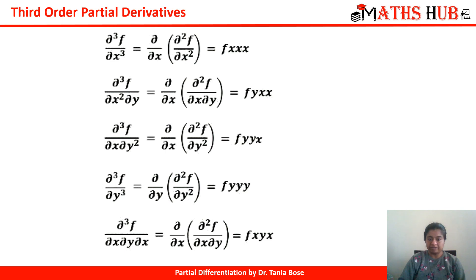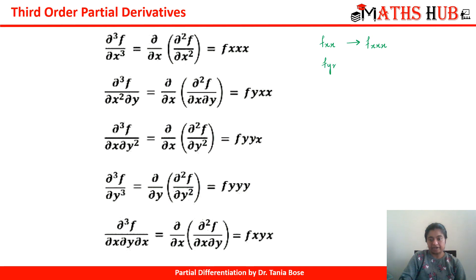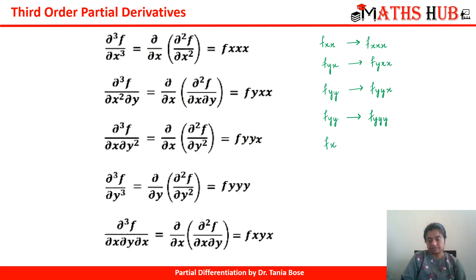Now let us come to the third order derivatives. From the second order derivatives, if you take the derivative of f of xx again with respect to x, you get f of xxx. If you take the derivative of f of yx with respect to x, you get f of yxx. Taking the derivative of f of yy with respect to x gives f of yyx, and with respect to y gives f of yyy. Similarly, taking the derivative of f of xy with respect to x gives f of xyx, and the process goes on.